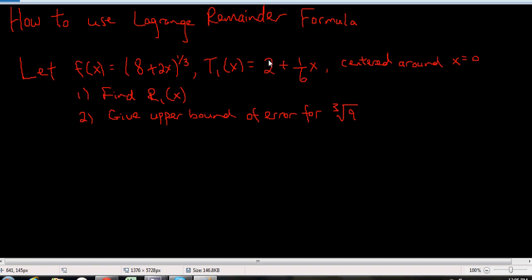If you're not given the Taylor polynomial, you could have easily just computed T1(x), and if it's not centered around 0, they would tell you it's centered around something else, and you could just simply calculate it yourself going through the Taylor polynomial formulas.